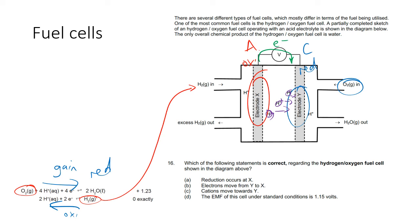Looking at the answer options: does reduction occur at X? No. Do electrons move from Y to X? No, they go the other way. Do cations move towards Y? Yes — positive ions are moving towards Y, so that's true. Is the EMF 1.15 volts under standard conditions? No — the standard EMF for all hydrogen-oxygen fuel cells is 1.23 volts, so that option is wrong. Therefore the correct answer is C — cations move towards Y.